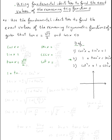One plus tangent squared equals secant squared, so secant equals plus or minus the square root of one plus tangent squared. We need to determine if secant is positive or negative. Since secant is one over cosine, if cosine is negative, then secant is also negative — they always share the same sign. So secant equals negative square root of one plus tangent squared.